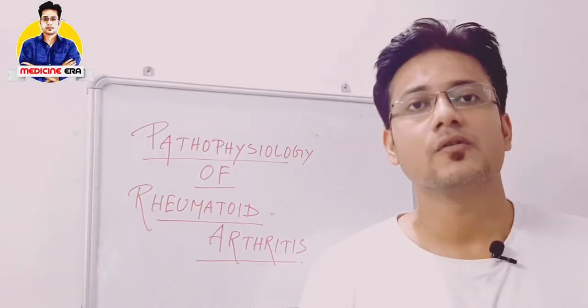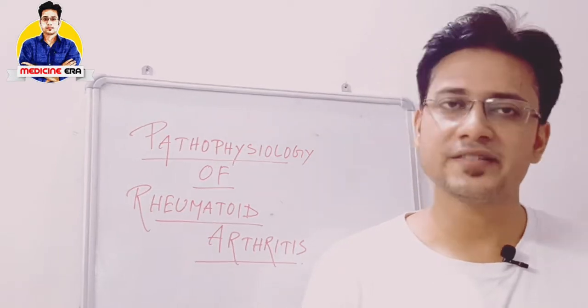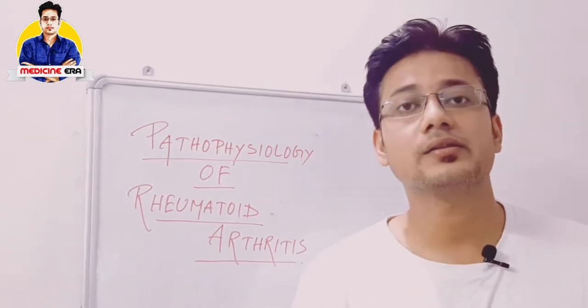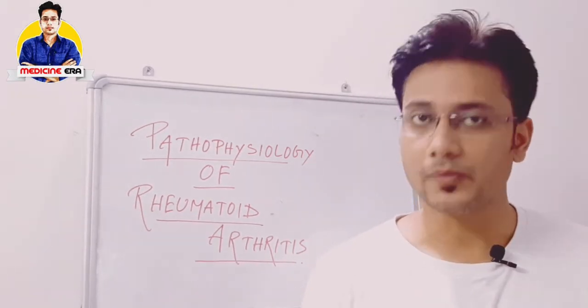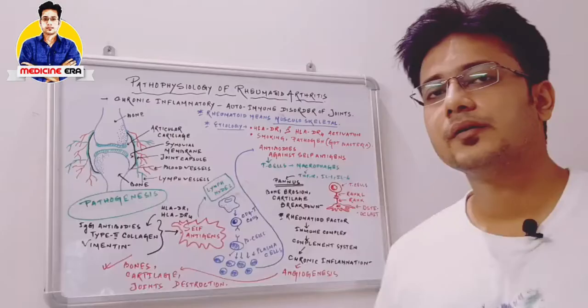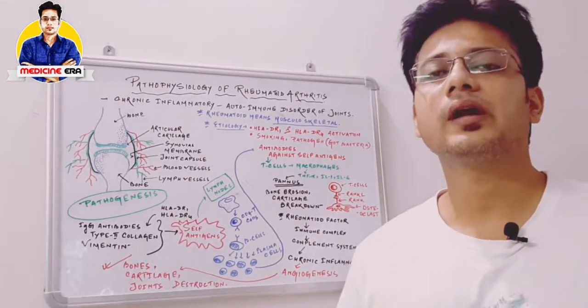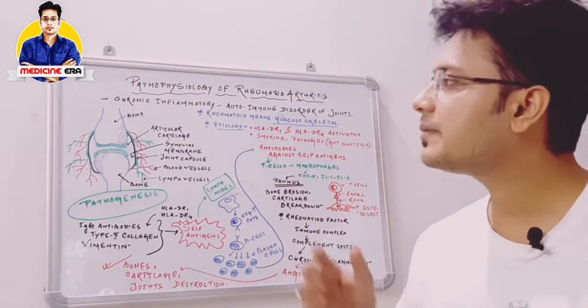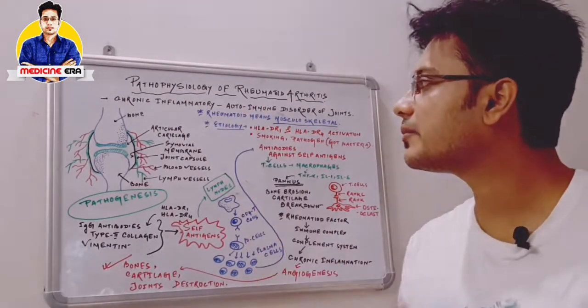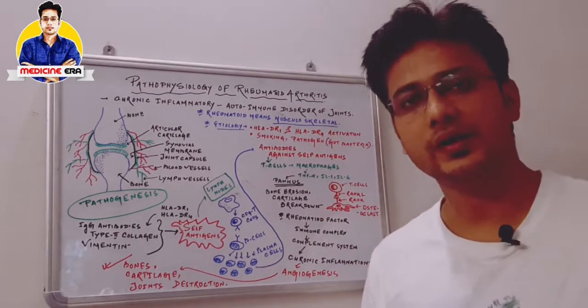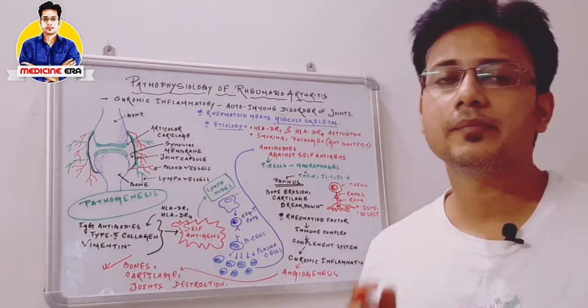Hello friends, welcome to my channel Medicine Era. Today we are going to start the pathophysiology of rheumatoid arthritis. Rheumatoid arthritis is mainly a chronic inflammatory and autoimmune disorder of joints.